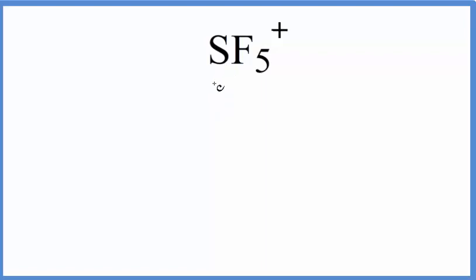So sulfur group 16, sometimes called 6A, six valence electrons. Fluorines in group 17, it'll have seven, but we have five fluorine atoms.